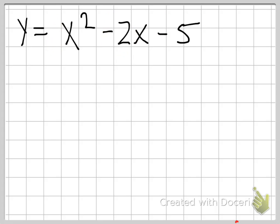So, when we have these numbers, we have to find out what a, b, and c are. Now, there's nothing in front of x squared, but there is an invisible one. So that means a equals one. And then b is always the number in front of x, or the coefficient in front of x, so it's negative two. And c is the constant, which is negative five.